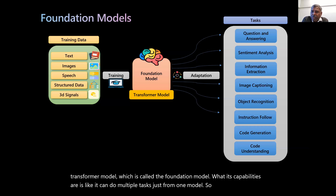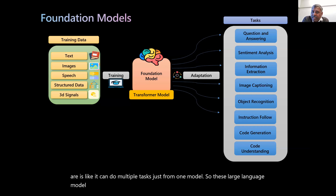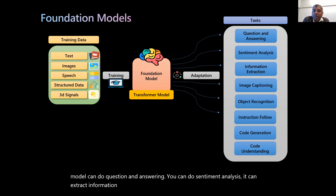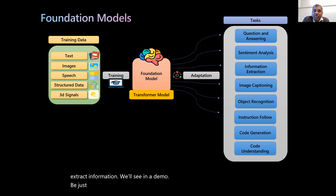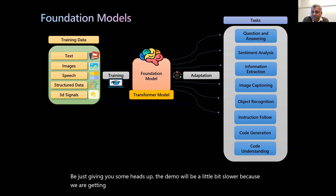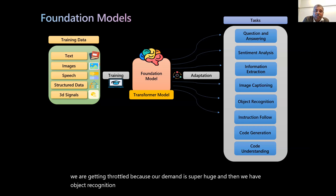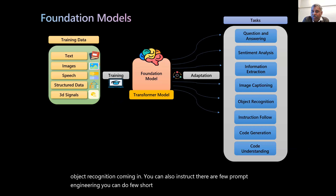These large language models can do question and answering, sentiment analysis, and information extraction — we'll see that in a demo. The demo will be a little slower because we are getting throttled due to very high demand. We also have object recognition and a few prompt engineering short-learnings to tell the model what you need.